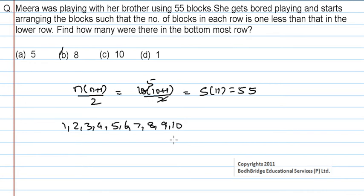The bottom most row will be 10 because the question states that each row has 1 less block than the lower row. So the lower row will be 10 and the next will be 9. She will be arranging like 10, 9, 8 — the sum will be 55 and every row is 1 less than the lower row.